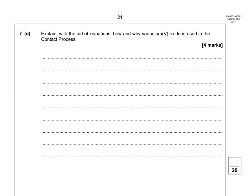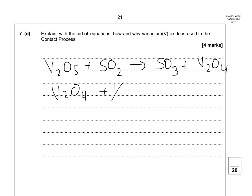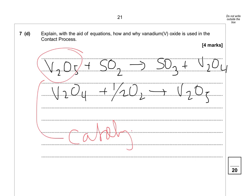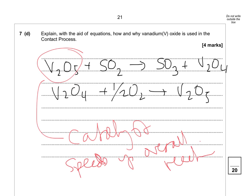Explain with the aid of equations how and why vanadium oxide is used in the contact process. The equations are: V₂O₅ + SO₂ → SO₃ + V₂O₄, then V₂O₄ + ½O₂ → V₂O₅. The vanadium oxide acts as a catalyst, and therefore it speeds up the overall reaction.